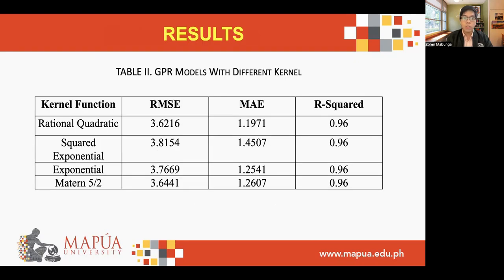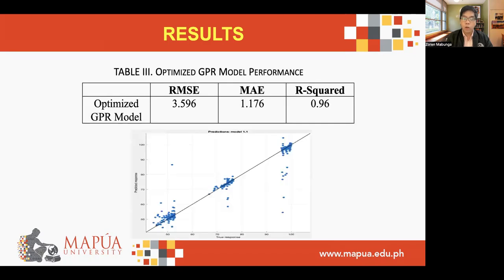Table 2 summarizes the performance in terms of RMSE, MAE, and R-squared of four GPR models with different kernel or covariance functions. In terms of RMSE, the GPR model with the rational quadratic kernel seems to be the best performing model with the lowest RMSE of 3.6216. The GPR model with exponential kernel function displays the lowest MAE among the four models, and all four models' R-squared values are identical at 0.96. After optimization, the RMSE of the optimized GPR model reduced to 3.596, the MAE was reduced to 1.176, while R-squared remains the same at 0.96.